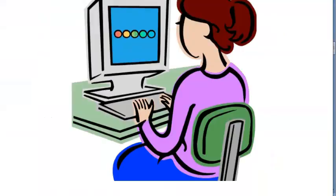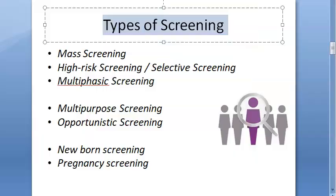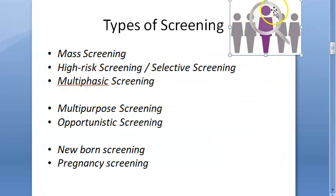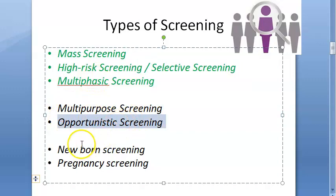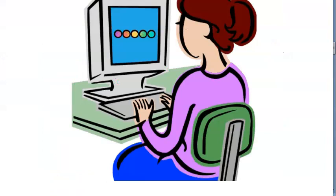What are the types of screening? They will ask you: define screening, and then types of screening. You have mass screening — you get a lot of people and check all of them. Or high-risk screening, where you find people who are high risk and only screen them — that is called selective screening. Then you have multi-phasic screening. Other types include multi-purpose screening, opportunistic screening — like somebody walks in for something in your hospital and you anyway test them for COVID — newborn screening, and pregnancy screening.